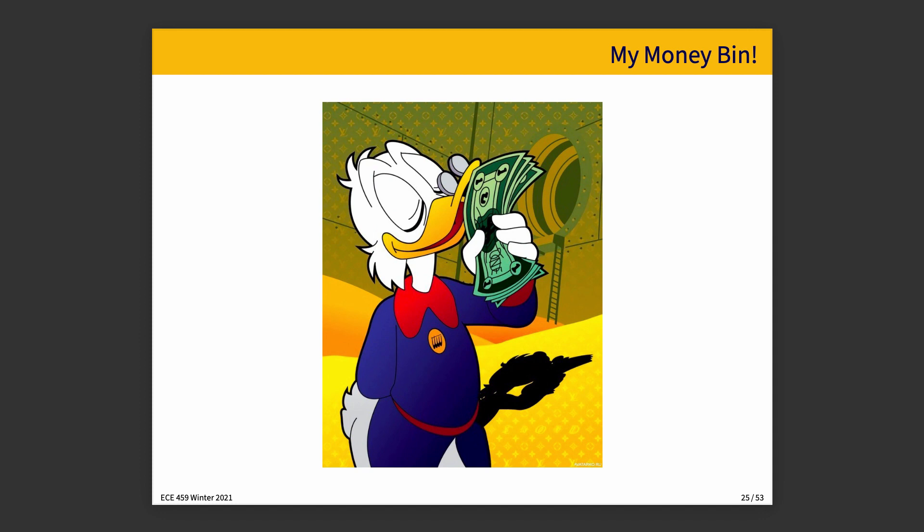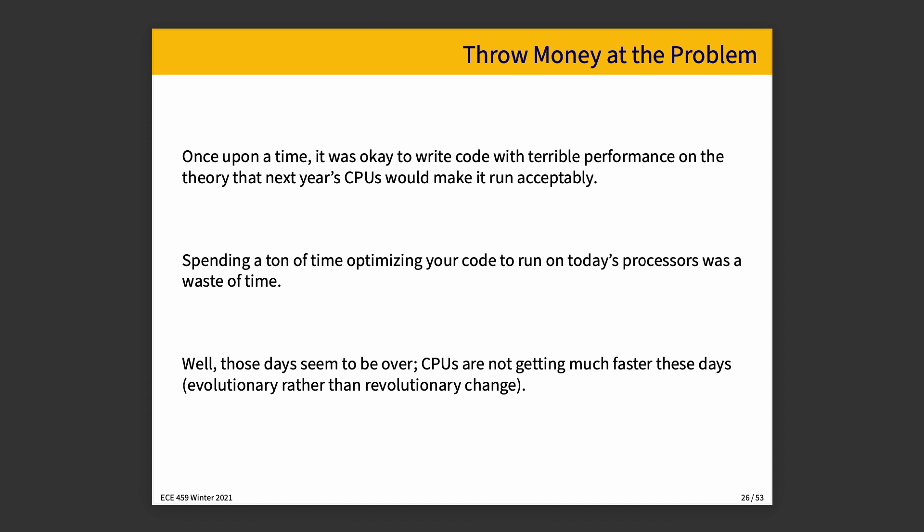Then there is the money approach. In the words of Scrooge McDuck: my money bin. Once upon a time — about 30 years ago — it was okay to write code with terrible performance on the theory that next year's CPU would make it run better. Spending time optimizing your code for this year's processor was kind of a waste because next year's would be faster. Those days seem to be over. We'll talk about CPU hardware a little later on, but CPUs are not getting very much faster these days. The changes we see are evolutionary rather than revolutionary — it's no longer the case that next year's CPU is twice as fast as last year's. We can't just say hardware will bail us out.